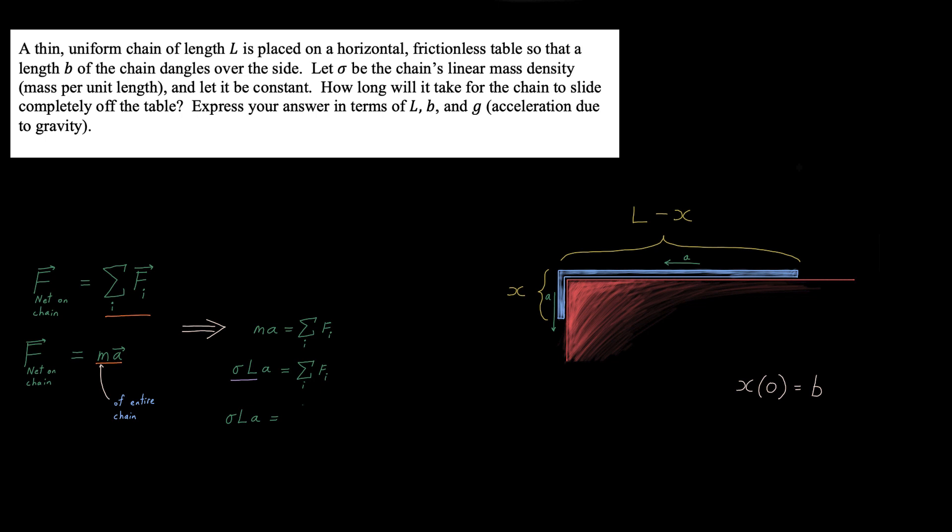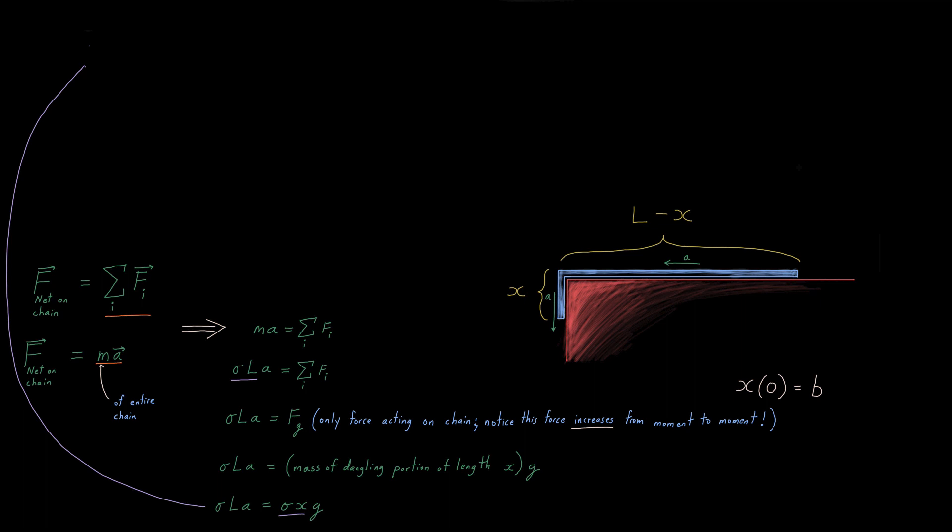I know that entire mass is just sigma times the entire length. That takes care of the left hand side there, and the only individual force contributing to the motion of this thing is the force of gravity acting on the dangling bit. That gravitational force is increasing from moment to moment because x is increasing from moment to moment, so the mass of that dangling portion times g is simply sigma times x times g, and we have some useful information now to work with.